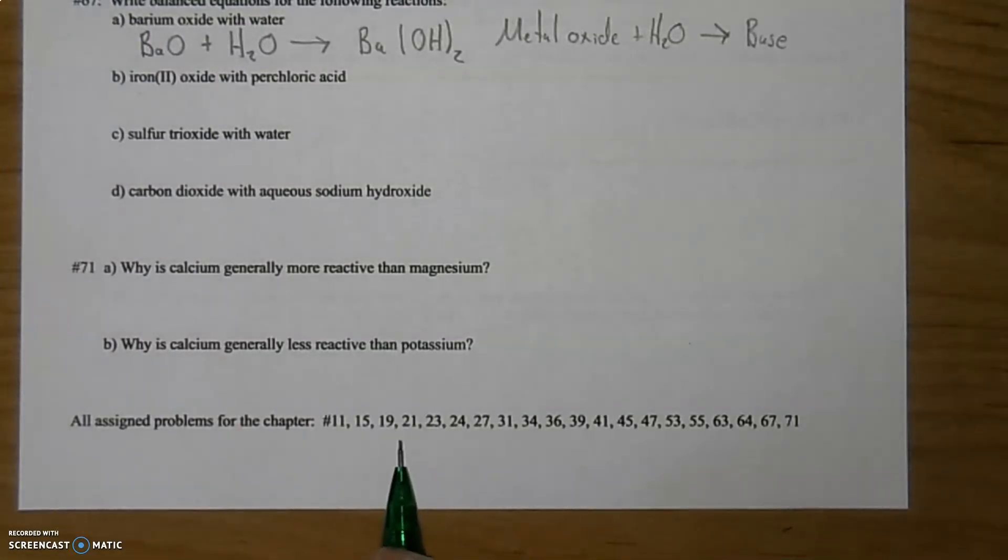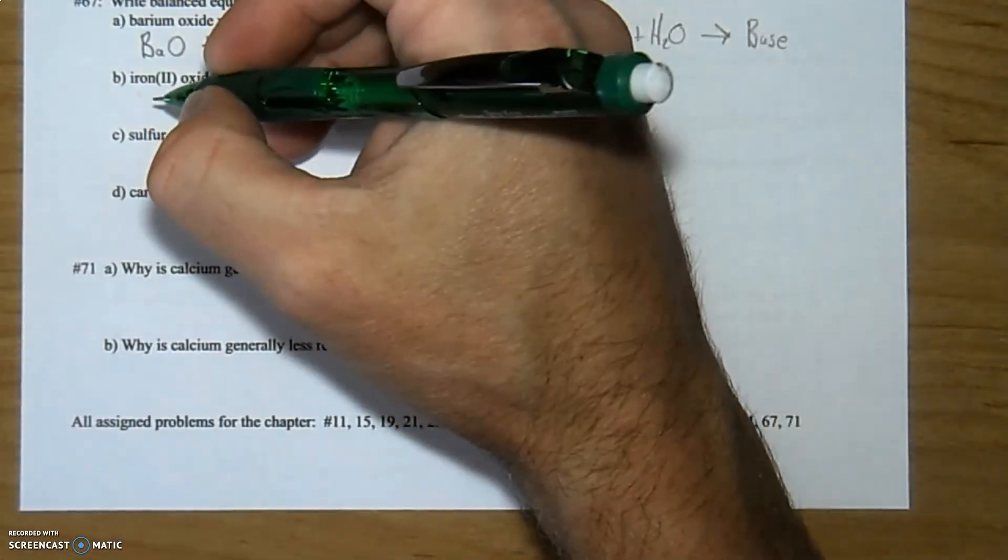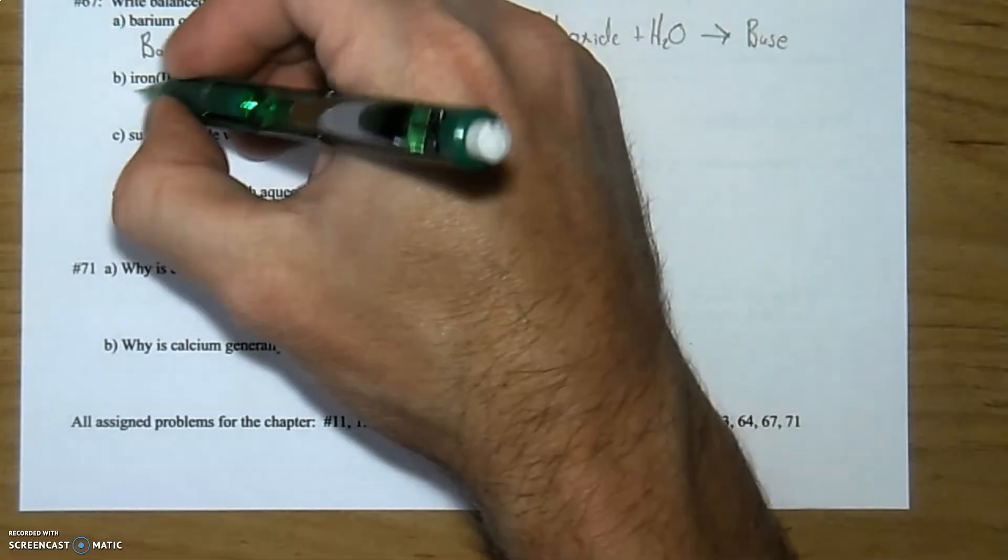For B, you have iron oxide with perchloric acid. So iron oxide is a metal oxide. Metal oxides and you're adding perchloric acid, which is an acid. So based on the example I gave you earlier, this should give us some salt and water as a product. So write this out. This is iron 2 oxide.